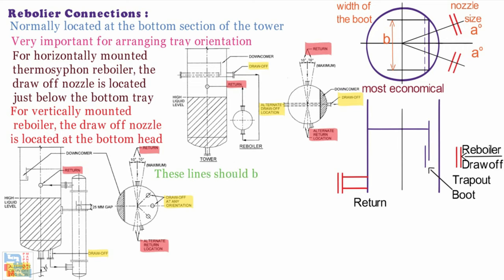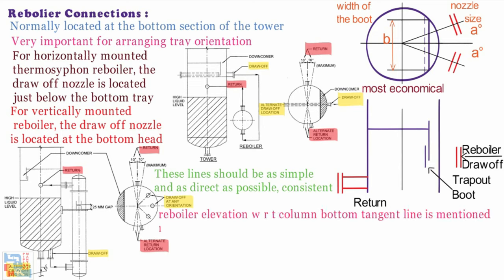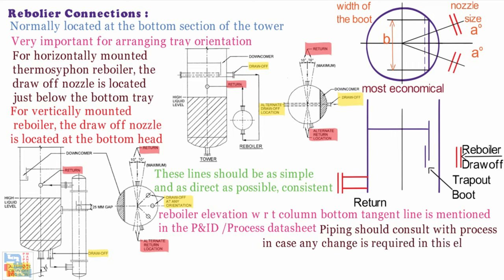These lines should be as simple and as direct as possible, consistent with the requirements of thermal flexibility. Generally, reboiler elevation with respect to column bottom tangent line is mentioned in the PNID or process data sheet. Piping should consult with process in case any change is required in this elevation.